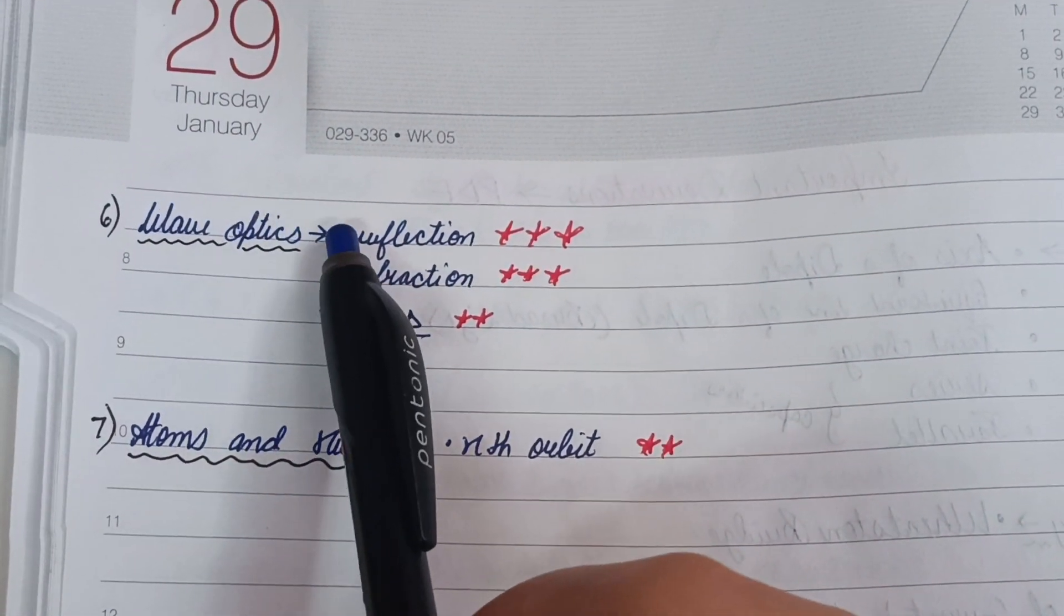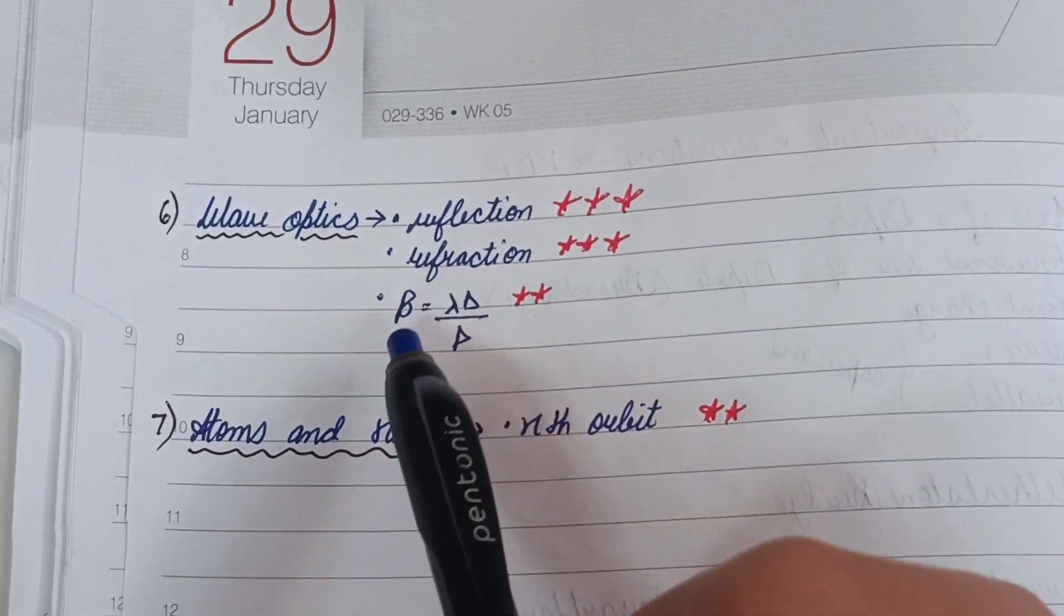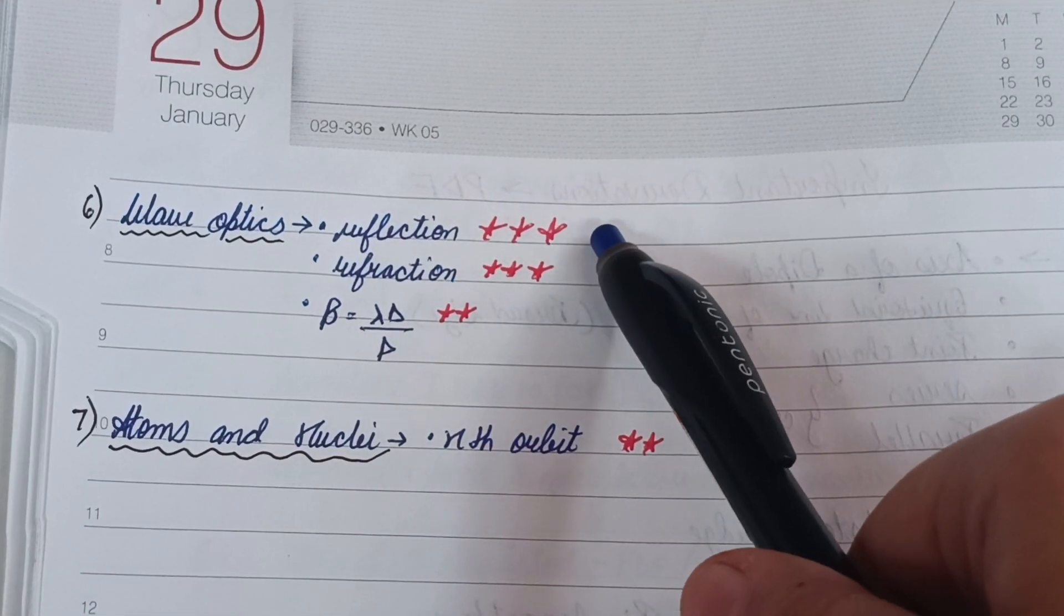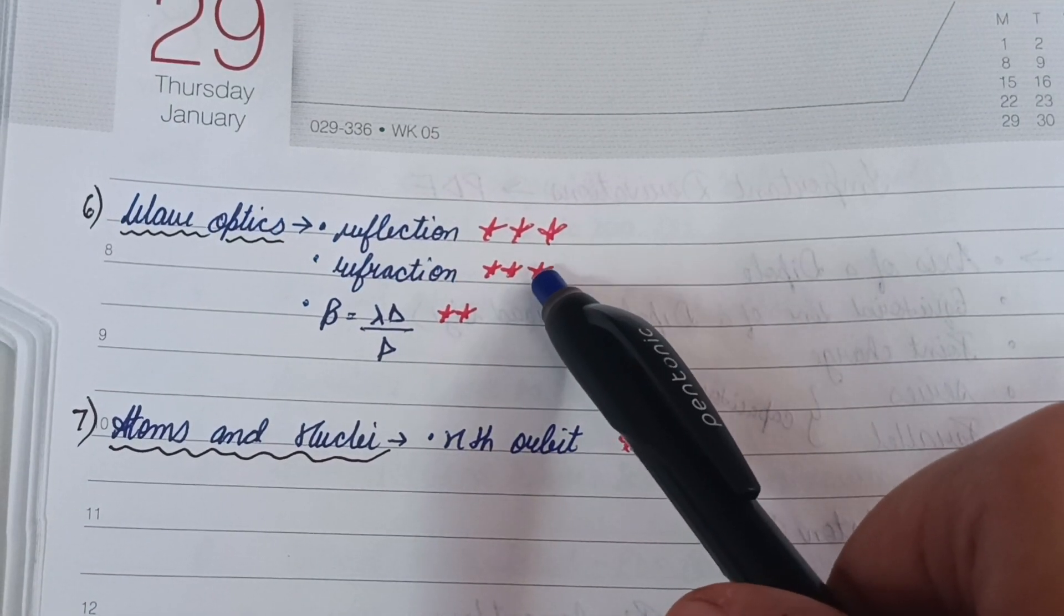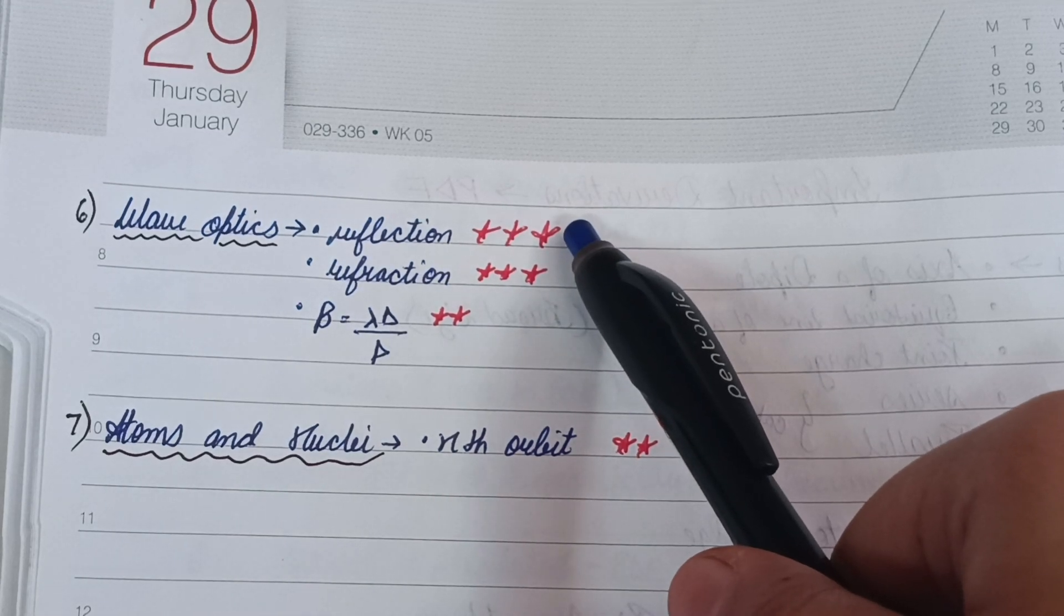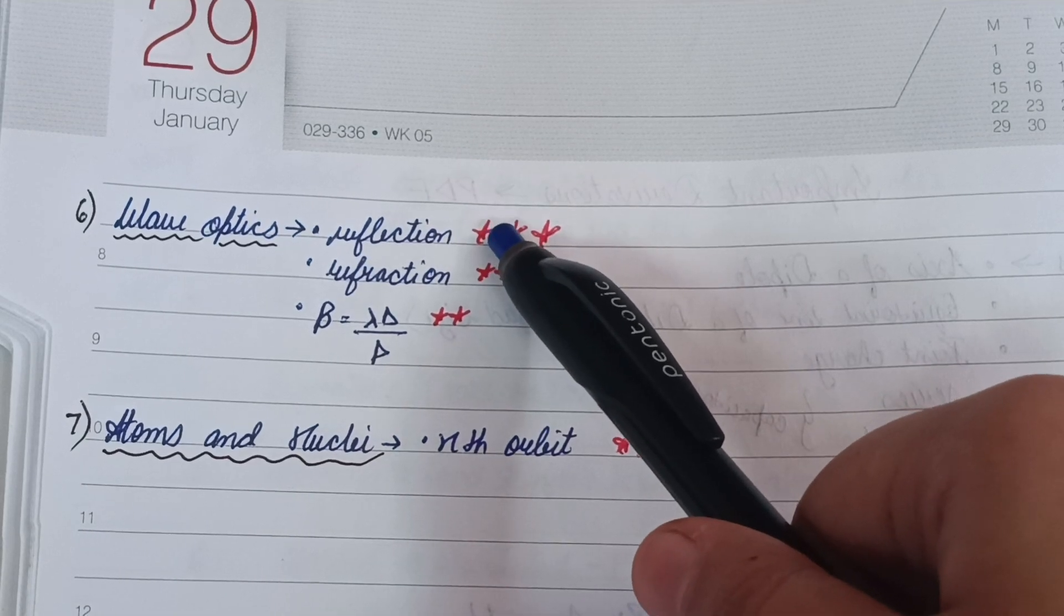From Wave Optics, you have to do reflection and refraction, and β = λD/d. Reflection and refraction is the most important. In 2024 you had got refraction, so in 2025 there is high chances of reflection, but again you have to do both.